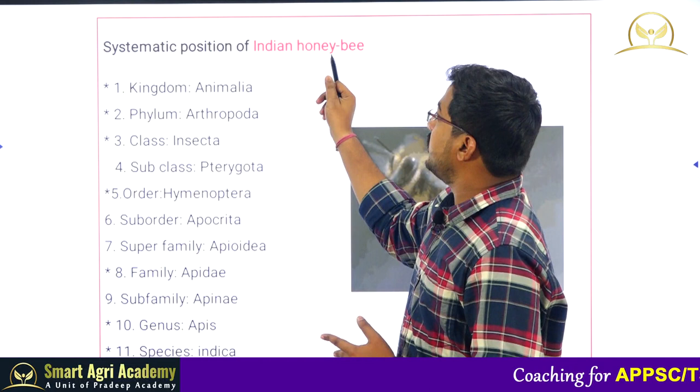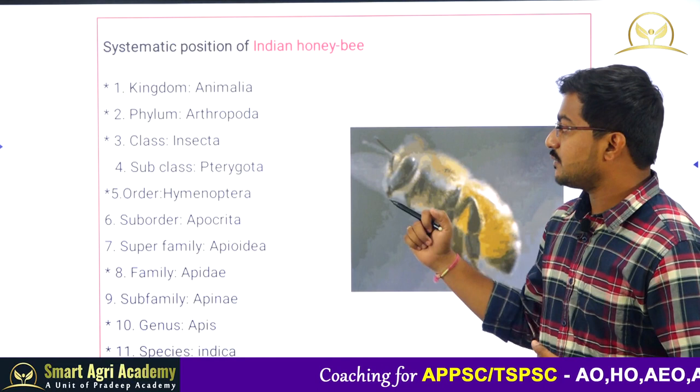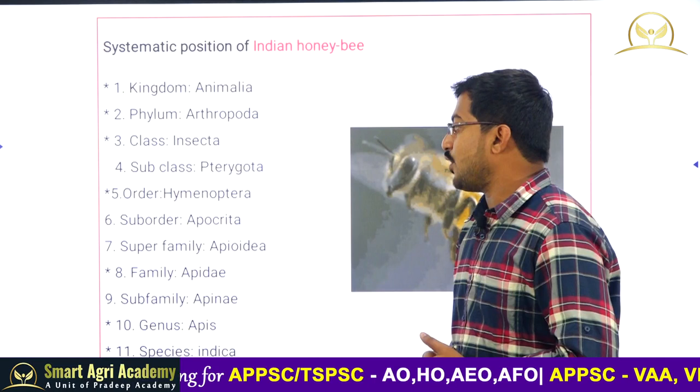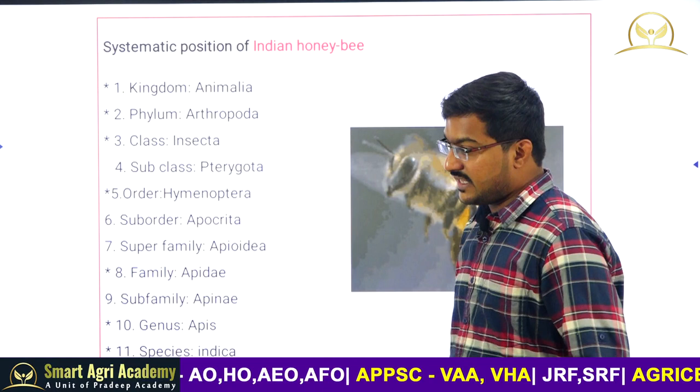The species of Apis include indica, dorsata, mellifera, and florea, etc. Now let us see the suffixes of super-specific categories, which are very important from an exam point of view. The ending word (suffix) for tribe names is '-ini'; subfamily ends in '-inae'; family ends in '-idae'; and superfamily ends in '-oidea'. These suffixes are very important for taxonomy questions in competitive exams.